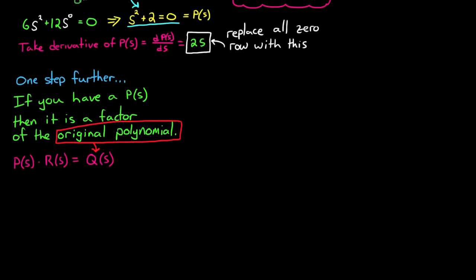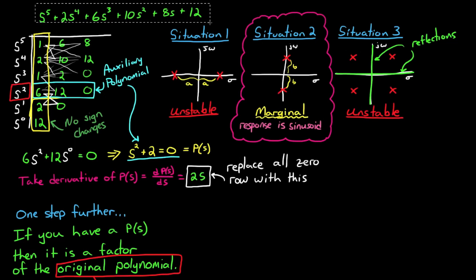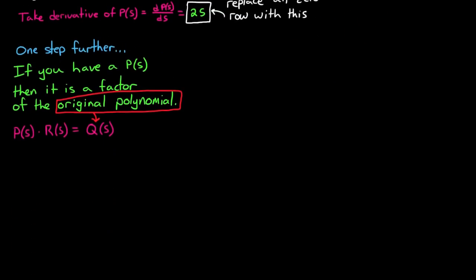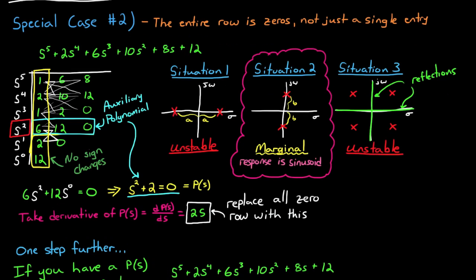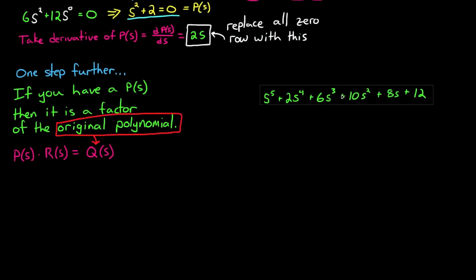We can find what this r is by doing polynomial division. Or in other words, we can take q of s, divide it by p of s, and you'll get r of s, or the remaining polynomial. So let's start with our original polynomial, which I've copied here, and divide it by s squared plus 2, which is the auxiliary polynomial.